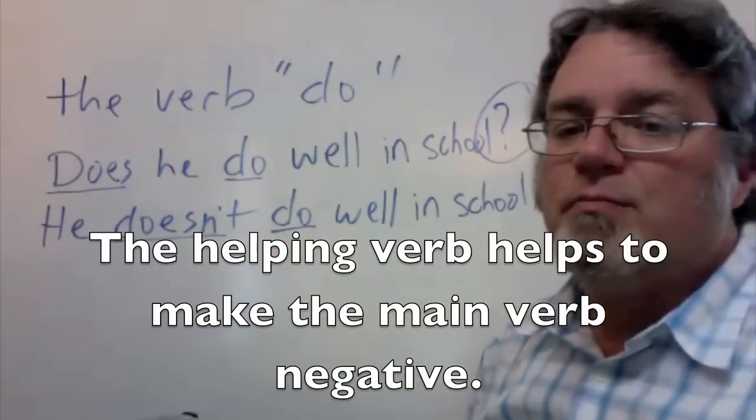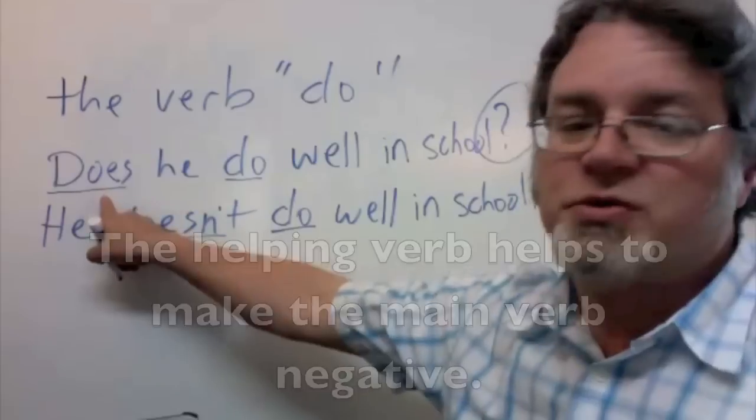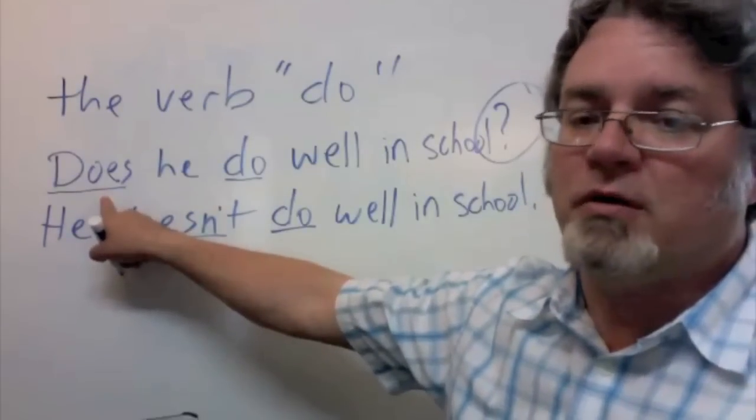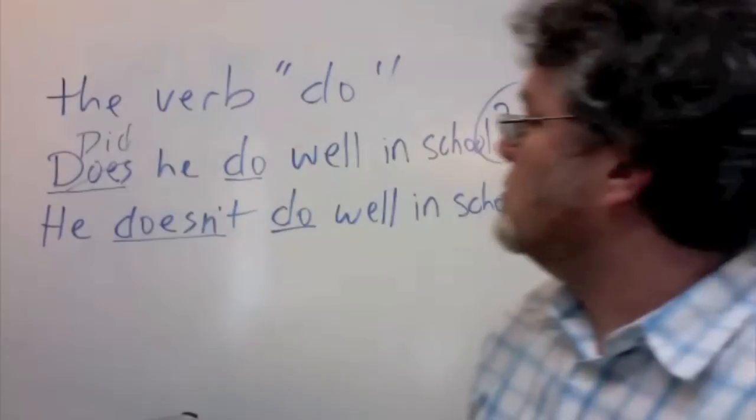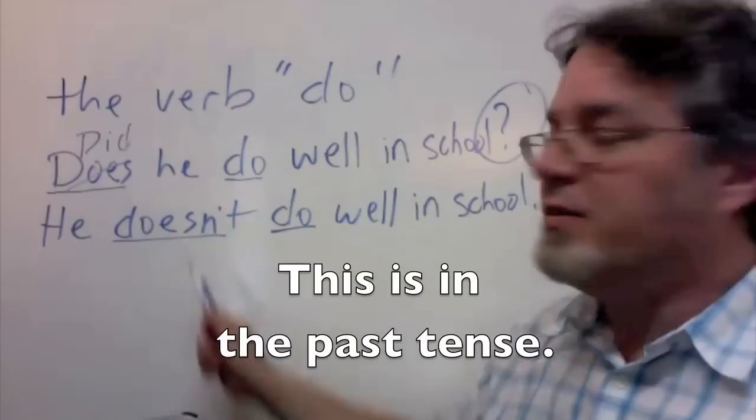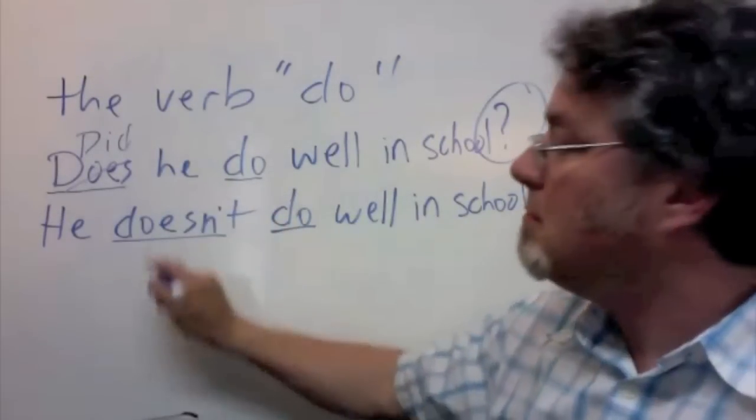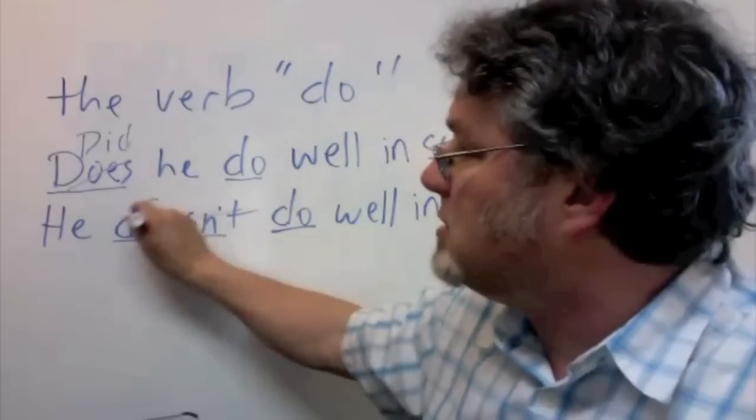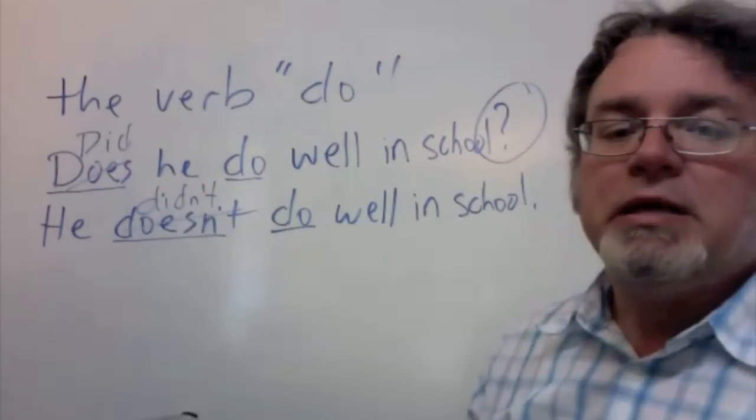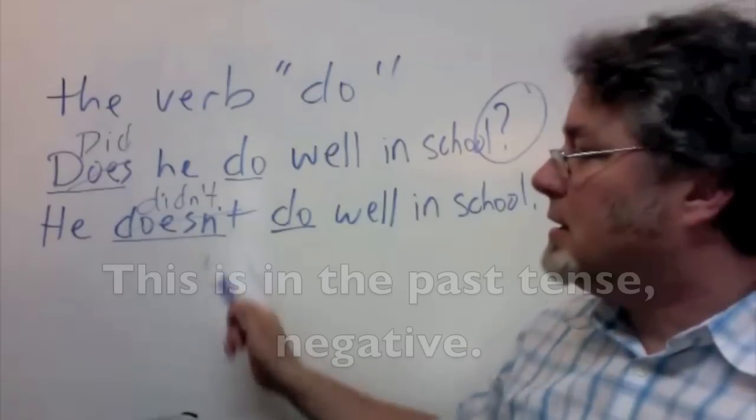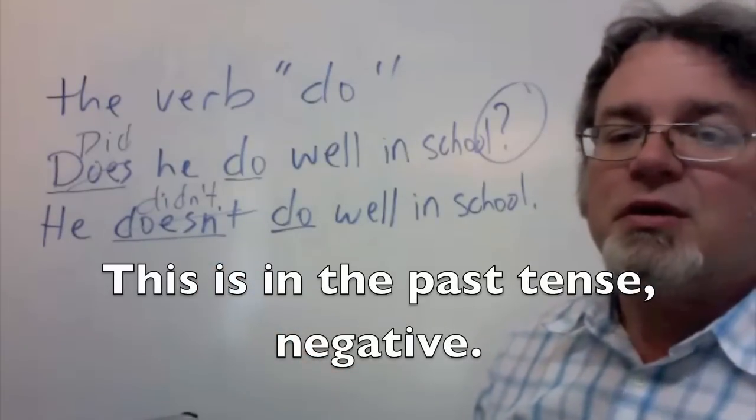To make each of these past tense, you just have to change the helping verb. Did he do well in school? Now this is in the past tense. Over here, change this to didn't. He didn't do well in school. Now this is in the past tense, negative.